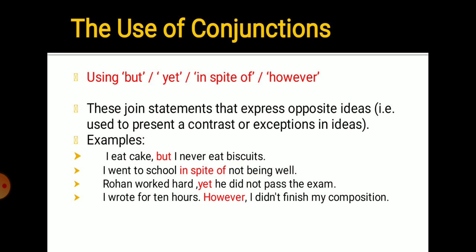I went to school in spite of not being well - a contrasting statement. Though I was not well, I still went to school. Rohan worked hard yet he did not pass the exam - a contrasting statement. He worked hard, he should have passed, but that didn't happen. I wrote for ten hours, however I didn't finish my composition. It's a contrasting statement. I worked for ten hours but my work wasn't done. So but, yet, in spite of, and however are conjunctions used to express opposite ideas.